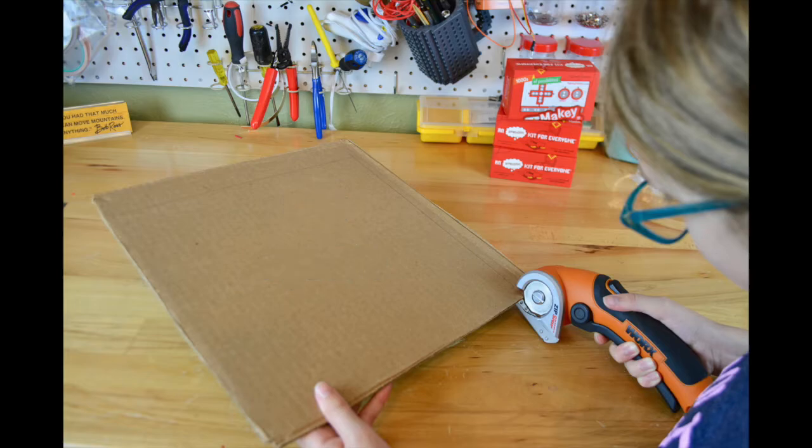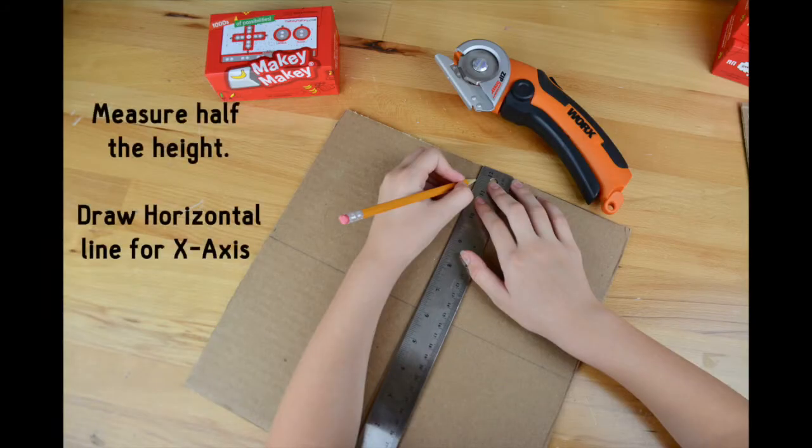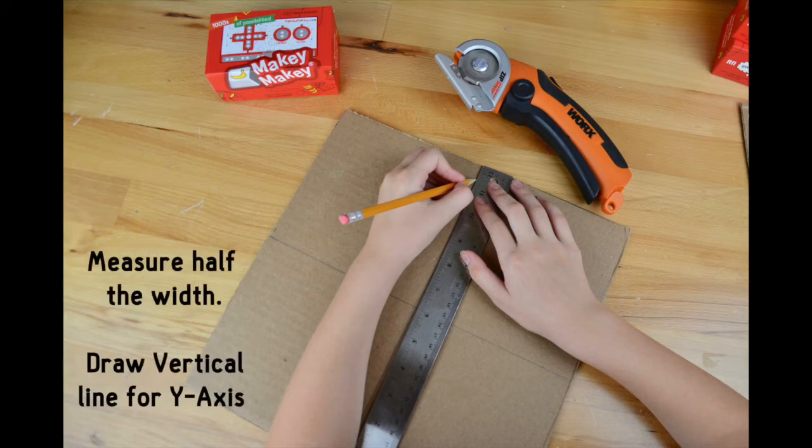Cut your cardboard into a perfect square, and then use your ruler to measure half the height and draw a line for the x-axis. Then you're going to measure half the width and draw a vertical line for the y-axis.